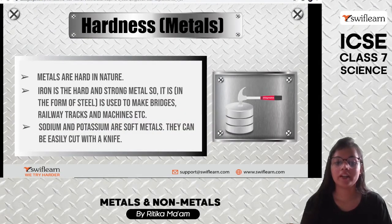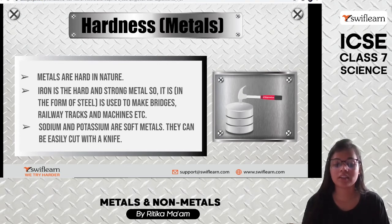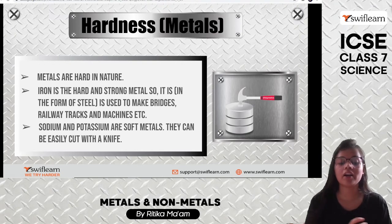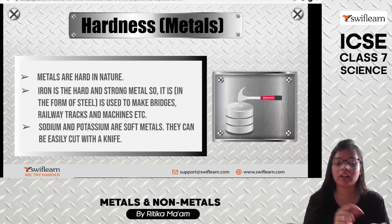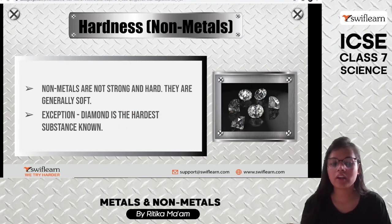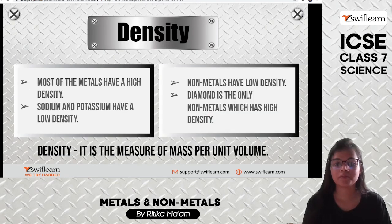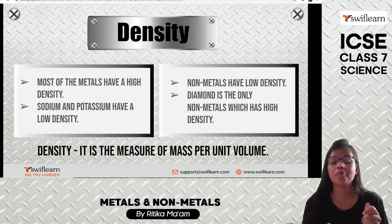Metals are generally hard. Iron is the hardest and strongest metal, which is why we use it to make buildings, bridges, railway tracks, and machinery. However, sodium and potassium are very soft metals — we can even cut them with a knife. Nonmetals are not very strong or hard — they are soft. The only exception is diamond, which is the hardest substance present on Earth.